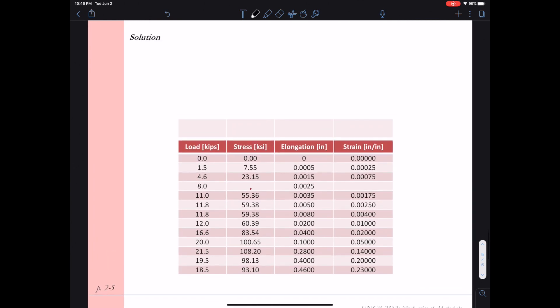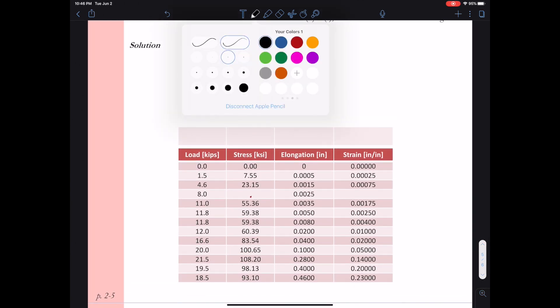So now we want to plot the stress strain curve. I've just copied the data to the bottom of this page. Again we have our force and our elongation data. But remember we want to plot stress versus strain. So we want to solve for sigma and we want to solve for epsilon.